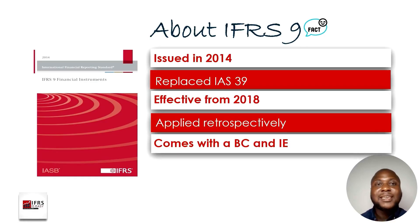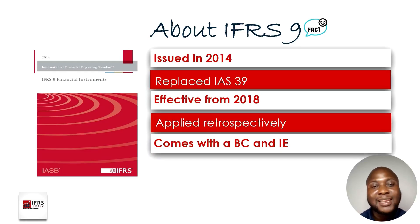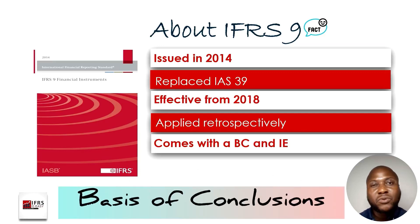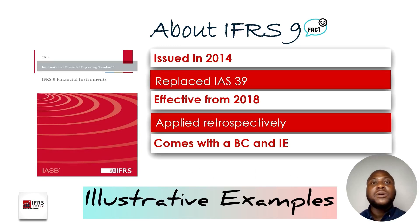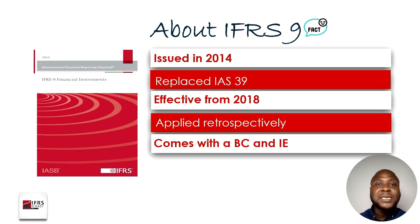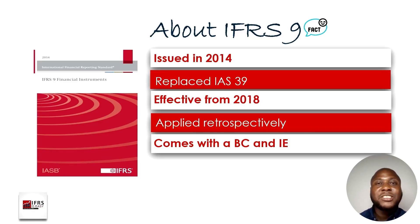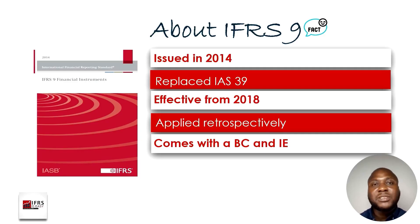Just like the way the IASB does with accounting standards, each accounting standard always comes with two additional documents. The first one is the basis of conclusion and the second one is the illustrative example. The basis of conclusion tries to explain each of the items that are on the accounting standard itself, while the illustrative example creates practical scenarios that discuss how to apply the concepts in the standard.